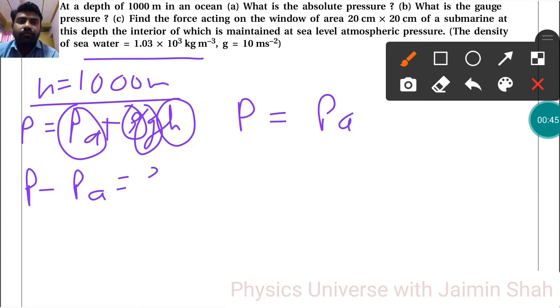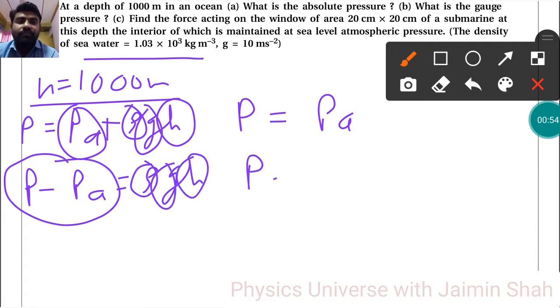So P minus Pa is equal to ρgh from the first equation. So this is our gauge pressure. By putting values ρ, g, and H we can easily find gauge pressure. So Pg is equal to P minus Pa, that is our gauge pressure which we will get in Pascal.